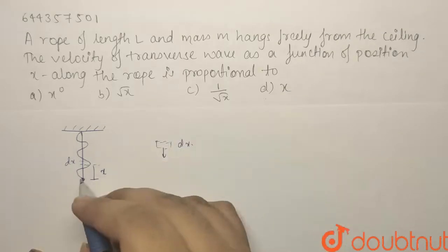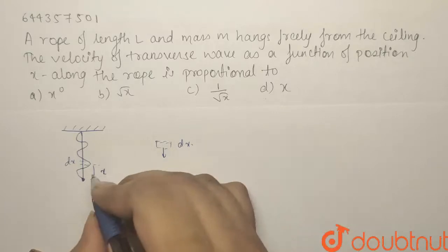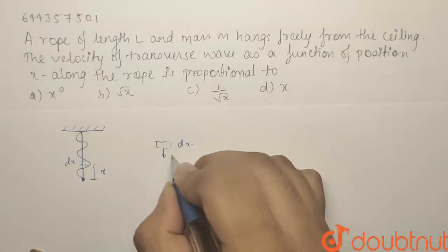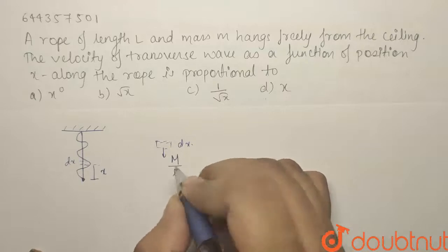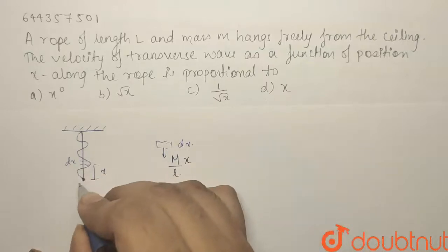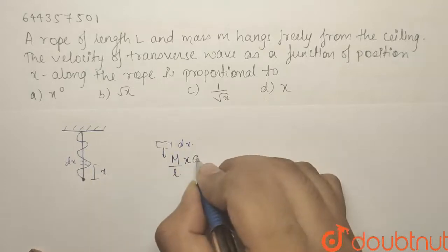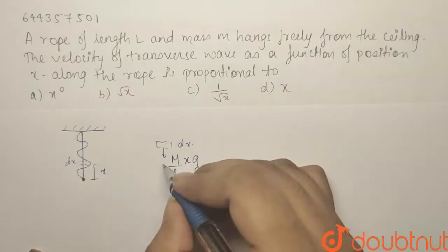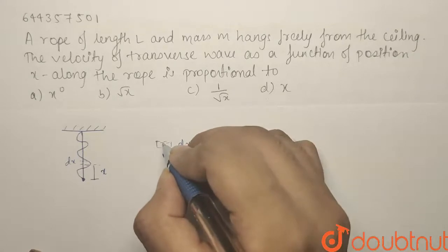the mass of this lower part, that is, it has a length x. So m by L is the mass per unit length into x will give the mass of this part of the rope into g. So this amount of force will be acting downwards and what will be acting upwards?